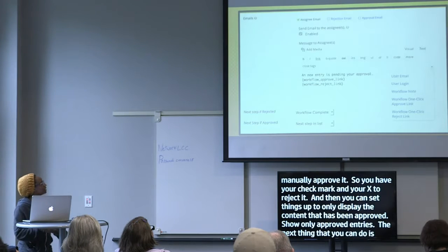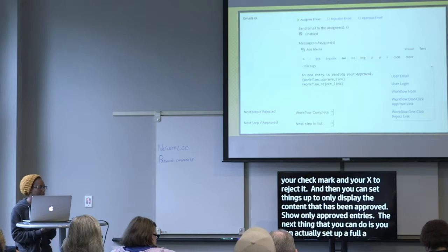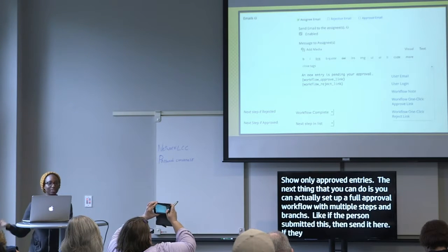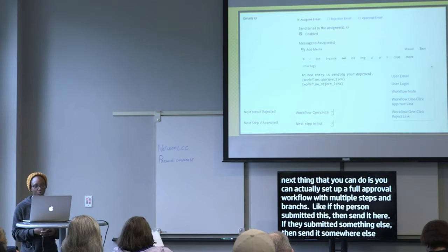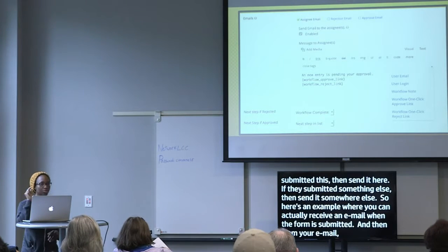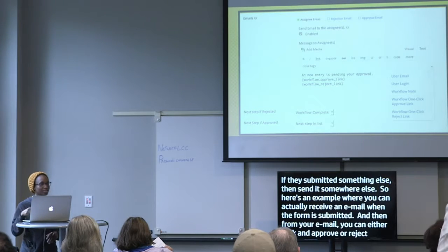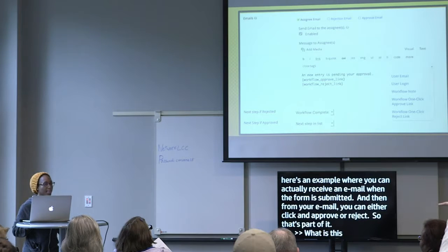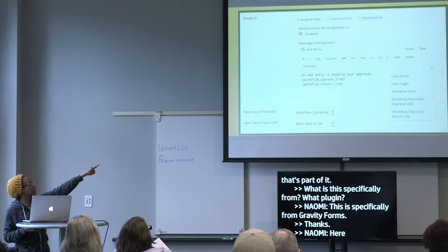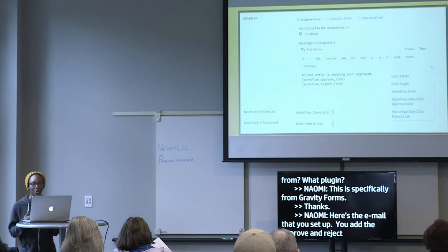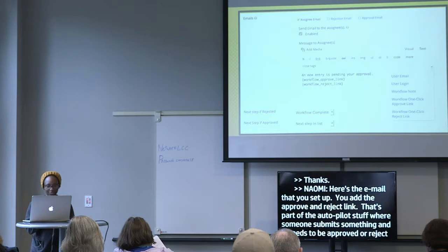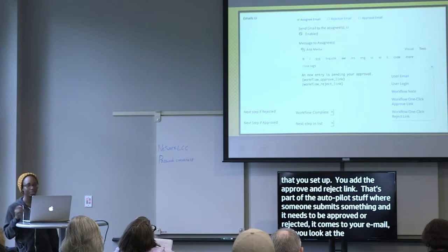You can also set up a full approval workflow with multiple steps and branches — if the person submitted this, send it here; if they submitted something else, send it somewhere else. Here's an example where you receive an email when the form is submitted, and from your email you can click an approve or reject link. This is from Gravity Forms. You set up the email and just add the approve link and the reject link — part of that autopilot stuff where approval comes right to your email.